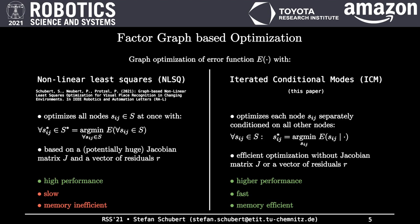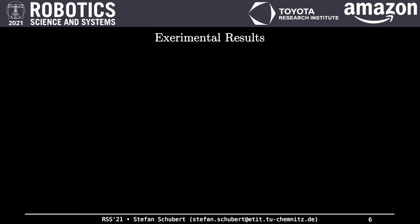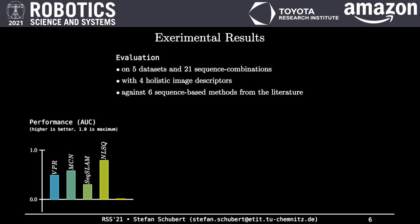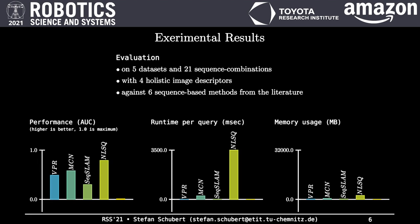This is supported by our comprehensive experimental results. We evaluated our approaches on 5 datasets and 21 sequence combinations with 4 holistic image descriptors against 6 sequence-based methods from the literature. Our experimental results show that the NLSQ-based graph optimization clearly outperforms several state-of-the-art methods. However, its runtime is quite slow and its memory usage is very high. Our novel ICM-based approach from this paper cannot only maintain but even improve the superior performance of NLSQ while being as fast and memory efficient as the state-of-the-art.